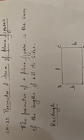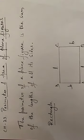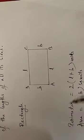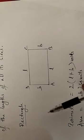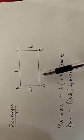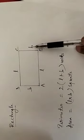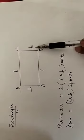Here in this figure you can see the rectangle. First of all, understand that in a rectangle the opposite sides are equal. If AB is the length, then DC is also the length. AD is the breadth and BC is also the breadth.